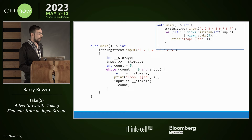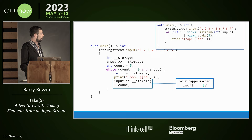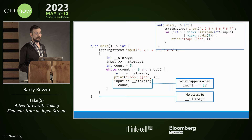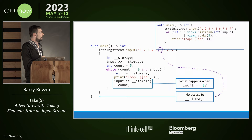What does this block actually do, particularly when count equals one? First we extract an element, then decrement count to zero, then check our condition — count is zero, so we finish the loop. We close the block and destroy everything, losing access to storage. But the storage was holding that last element we extracted — there's our six. That's where we went wrong: we extracted the sixth element on the last iteration of the loop, but then have no access to it.